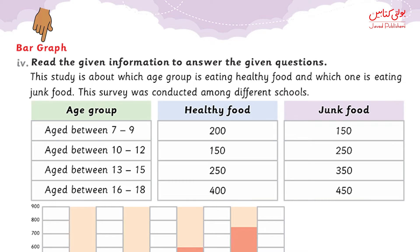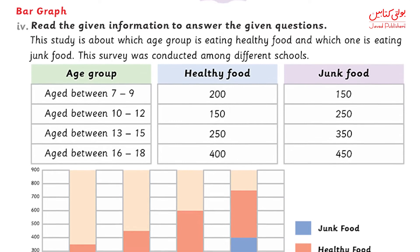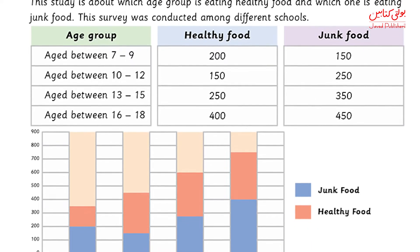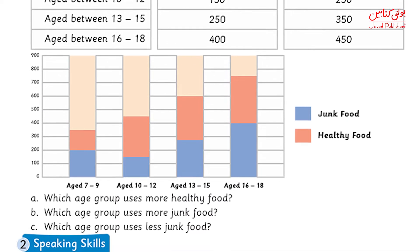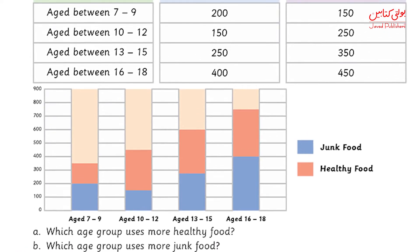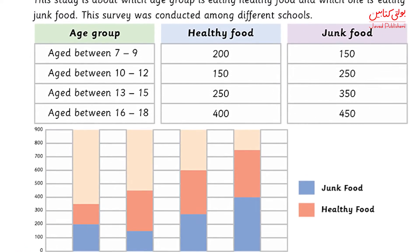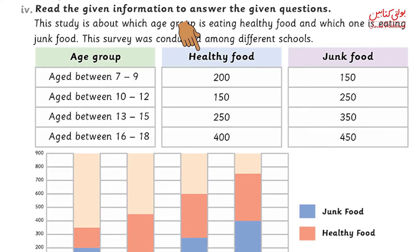Let's start page 69. We will be doing a bar graph. A bar graph is a kind of graph in which you see columns. If you look at the picture, you will see columns. Looking at the vertical line, you are looking at the y-axis. In this graph we will be talking about healthy food habits and junk food eating habits in the age groups of 7 to 9, 10 to 12, 13 to 15, and 16 to 18.